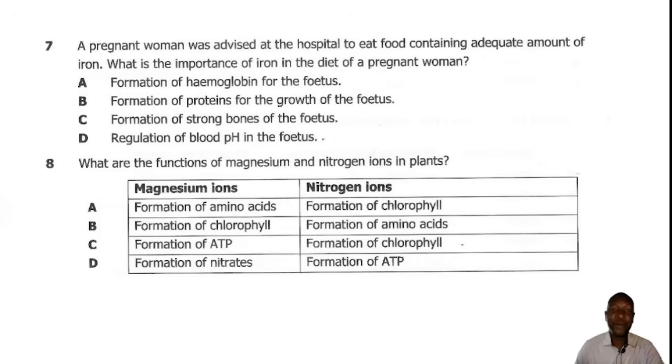Question 7. A pregnant woman was advised at a hospital to eat food containing adequate amount of iron. What is the importance of iron in the diet of a pregnant woman? Iron is important for formation of hemoglobin, which is the red blood cells. So the correct answer is A.